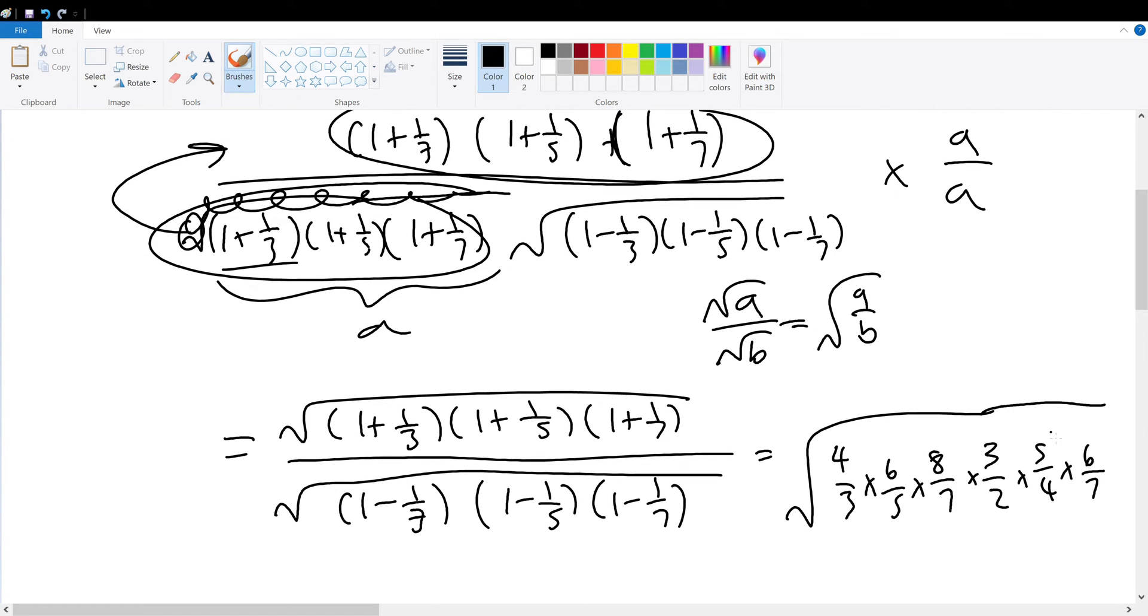Wait, wait, that should be 7 over 6 rather, so 7 over 6. Make sure you don't make those silly mistakes.